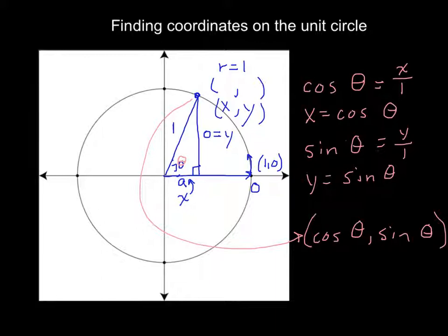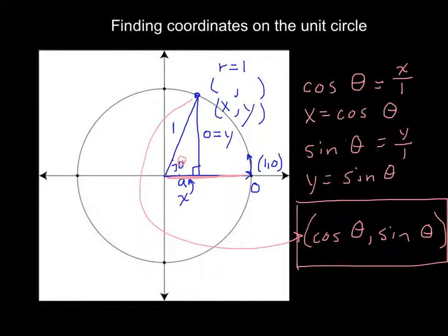And so that means that on a unit circle, anywhere on the unit circle, if you have the angle from our starting side, which is that positive x side, any angle will be cosine theta, sine theta. So it's pretty easy. Just plug that in.